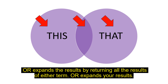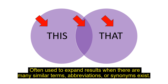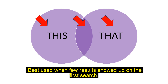OR expands the results by returning all the results of either term. OR is represented by everything in both circles — this circle or that circle. It is often used to expand results when there are many similar terms, abbreviations, or synonyms, and is best used when few results showed up on the first search.